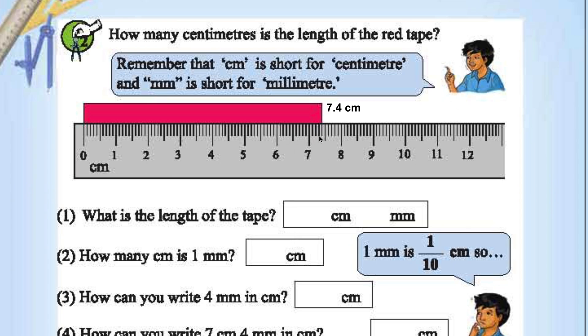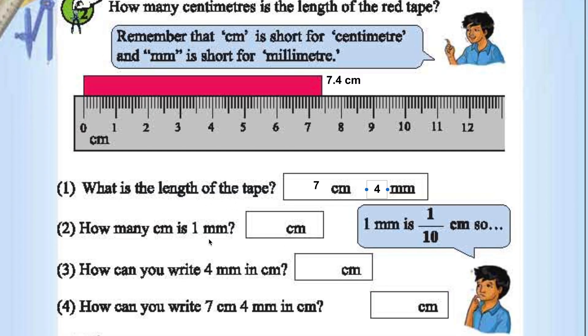Each small division is called mm. So 7 cm and 4 mm. So 7 cm and 4 mm. 1 mm is 0.1 cm. How many cm is 1 mm? 0.1. 1 by 10 or 0.1 cm.